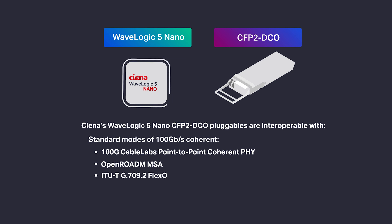Going one step further, operators can also take advantage of WaveLogic 5 nano's two performance-optimized modes, 100-gig and 200-gig, by improving both capacity and reach.